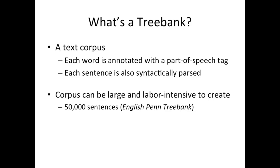The parsing is done partially manually and partially by machine. For example, you could run a machine on the sentences, and it would suggest a parse. You could select that parse, a closely related one, or fix it up. Another way is to completely manually build the parse tree, which is actually quite hard — and if you've got 50,000 sentences to do, that will take a very long time.